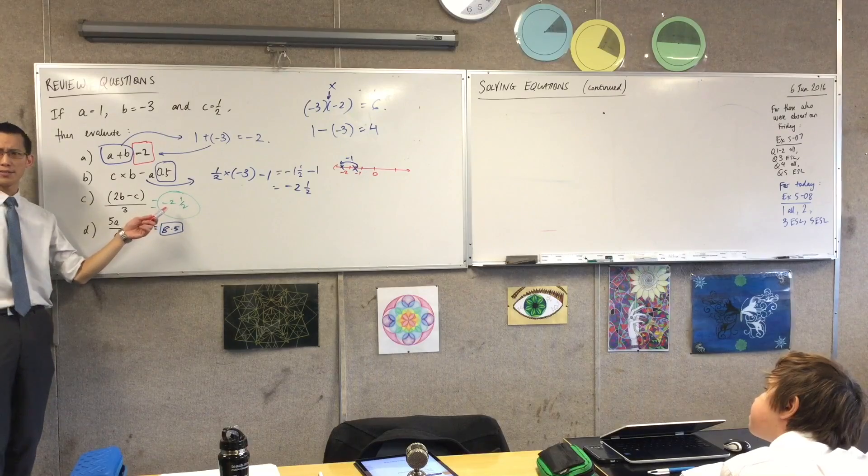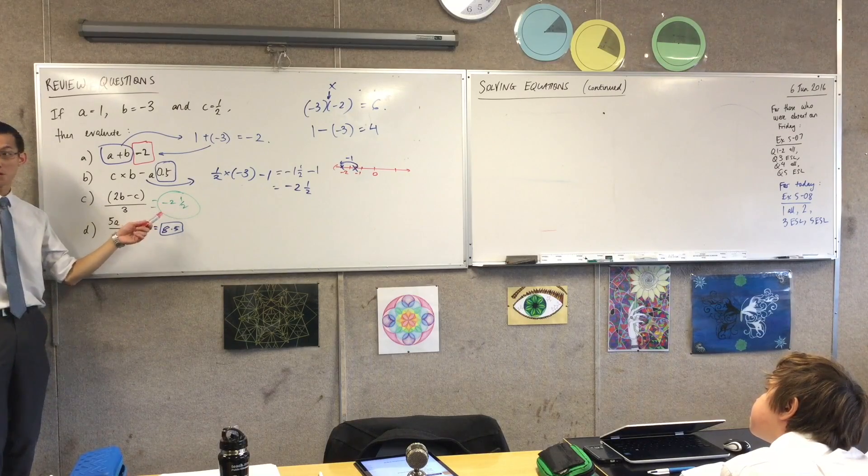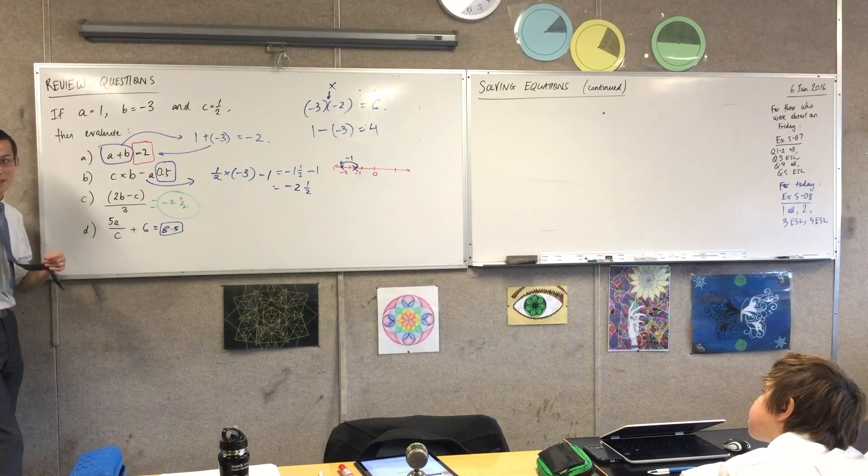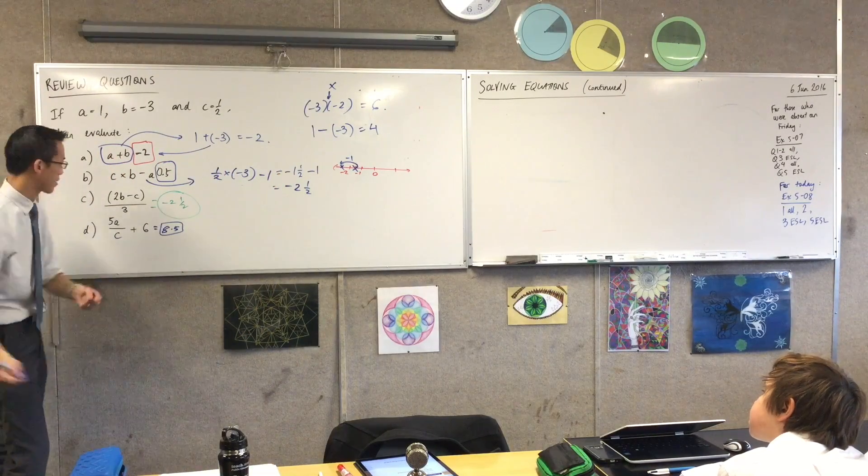Um, is this one also negative 2 and a half? Should we find out? Should we give this a go? I'm going to do the, what did Turin call it again? What's it called starting with s? Substitution. I'm going to do the substitution step. Okay? So, let's give this a go.